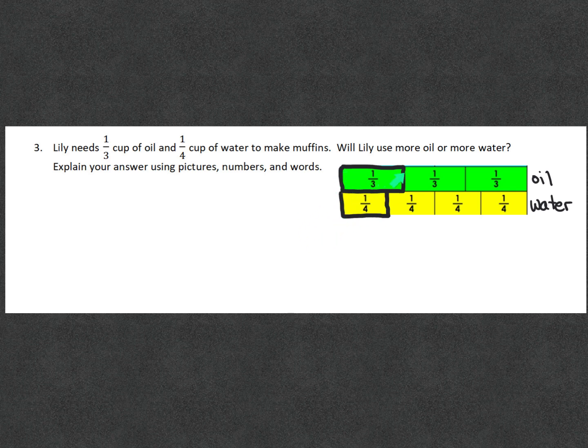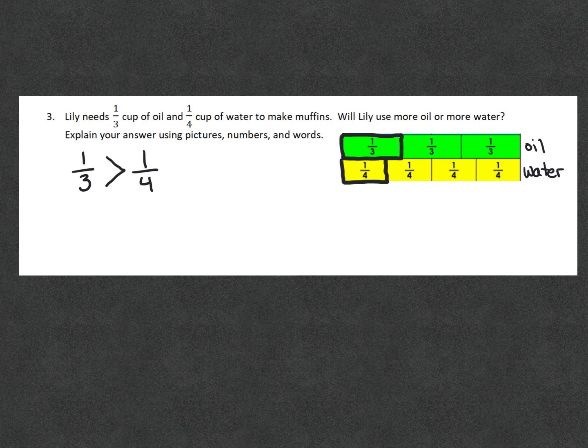So I added in this diagram and I made it so we could see the difference in sizes. One third plus one third plus one third is one whole or three thirds. One fourth plus one fourth plus one fourth plus one fourth is another whole or four fourths. One third plus one third has a bigger box than the one fourth. So one third is greater than one fourth.